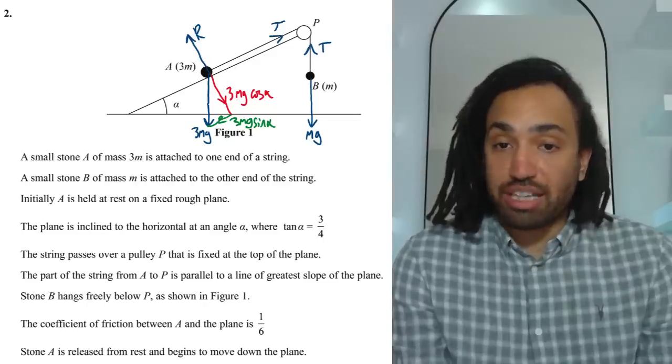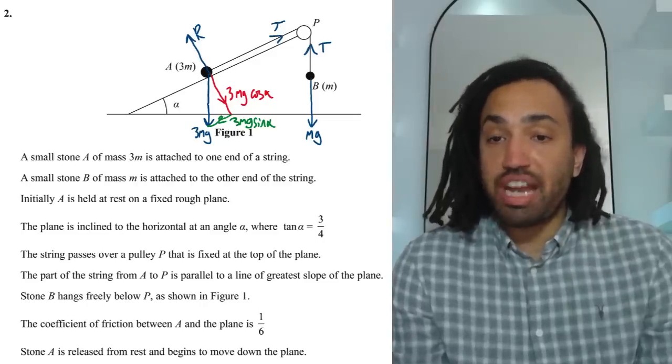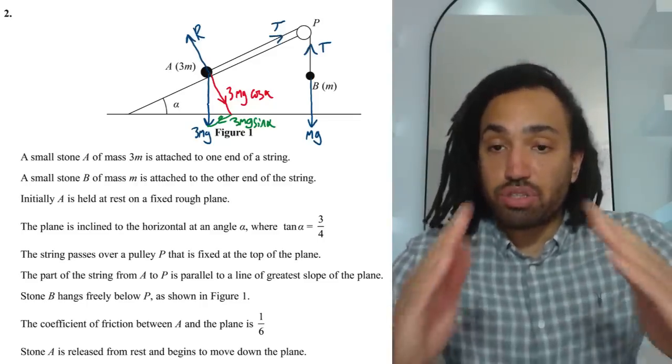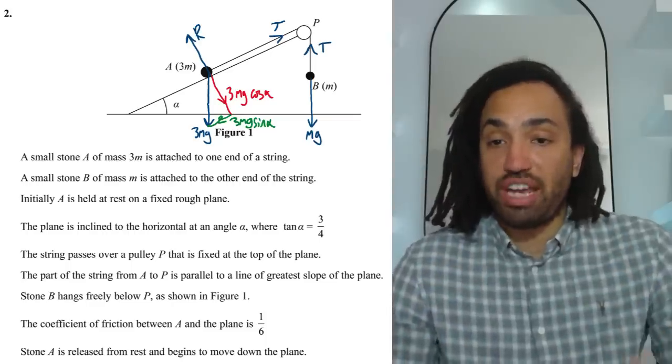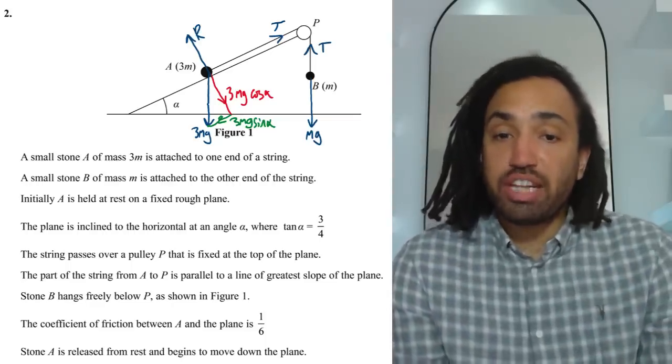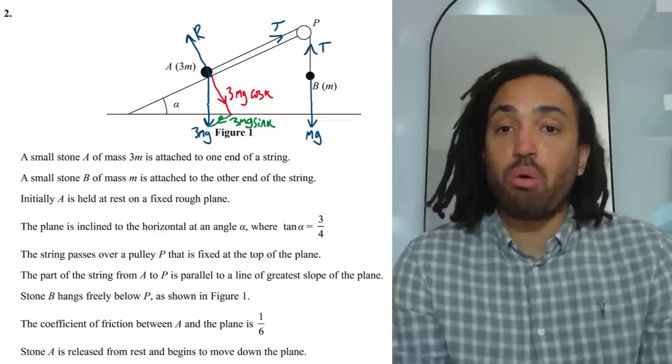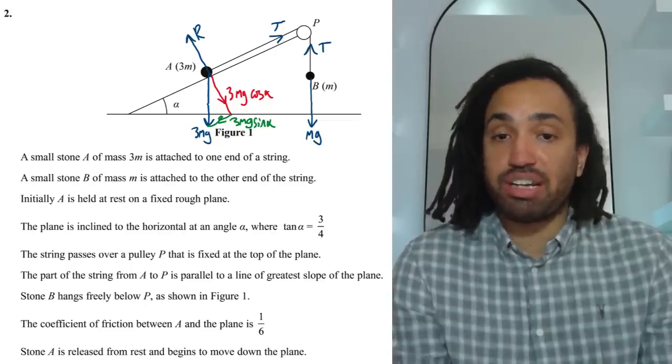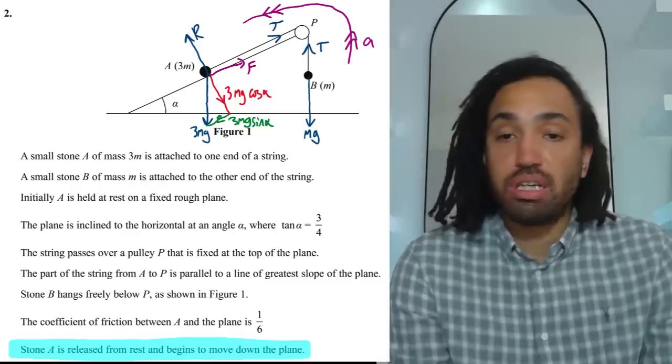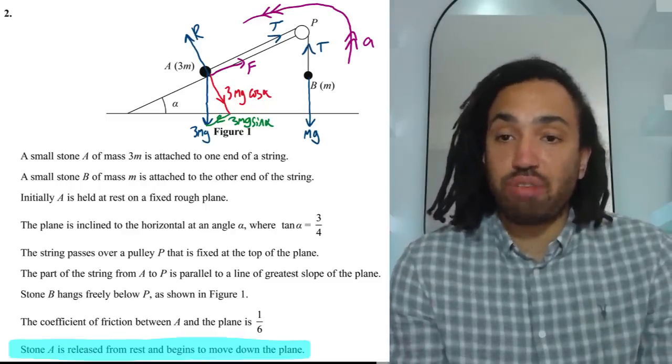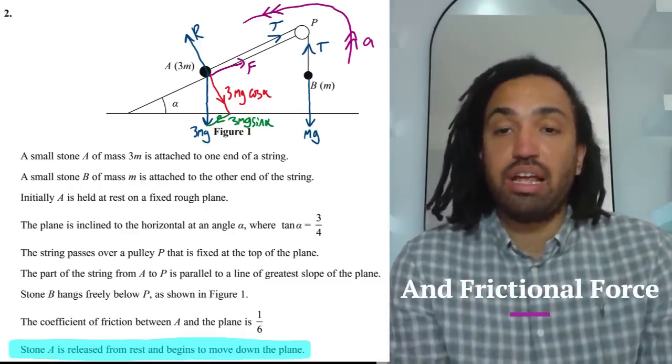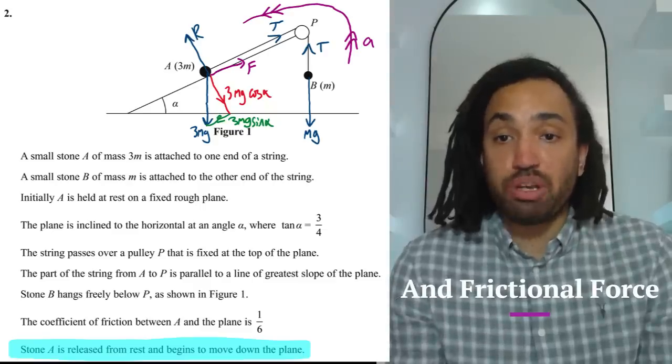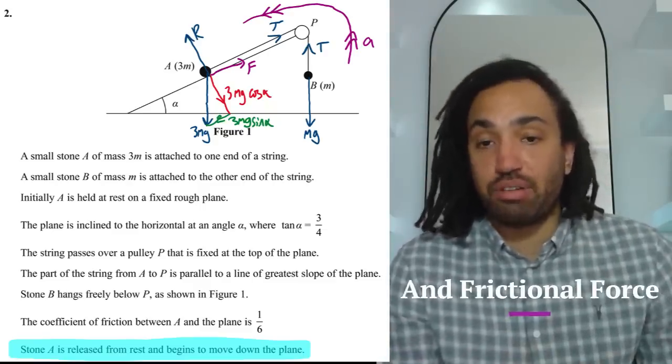I would then draw on the reactional force and then I would draw the tension which will be going inwards towards the pulley one for each object and then I would read the question and I would figure out whether or not the object is going to be going down the slope or up the slope. In this case it says it's going down so I'll draw an acceleration line in purple here and that tells me that object B will be going up and object A will be going down the slope.